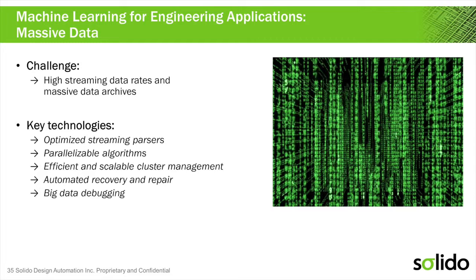To do this we need optimized streaming parsers that can read data efficiently as it comes in, and parallelizable algorithms. A lot of machine learning technologies don't parallelize well — they run on single CPUs or a small number of CPUs. We need this to run on thousands of CPUs to keep up with the rate at which data is coming in. We also need scalable cluster management — distributing and dispatching all these jobs while bringing everything together into a single central model is a very hard problem.